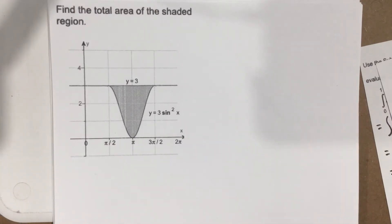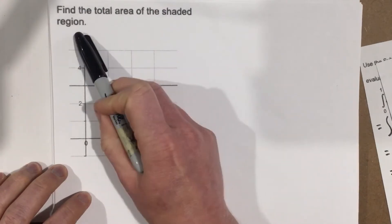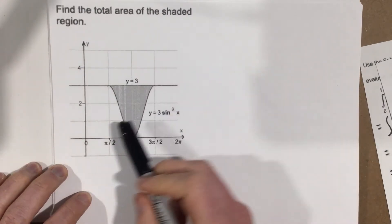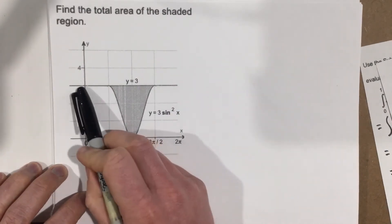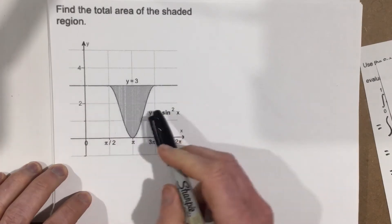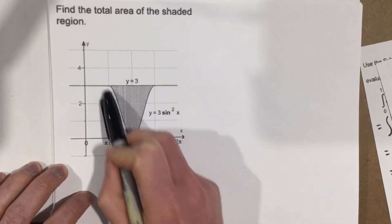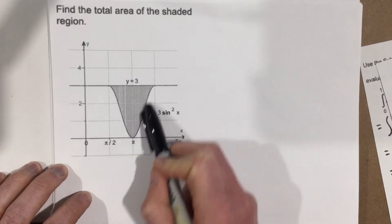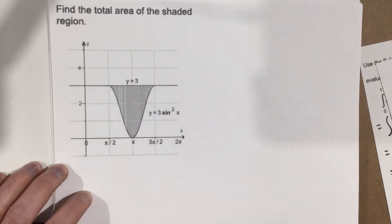This is problem number four from section 5-6. It asks us to find the total area of the shaded region, and it gives us two lines. One line is horizontal, y equals 3, and the other line is y equals 3 sine squared x. And they want us to find the area that's inside of there.